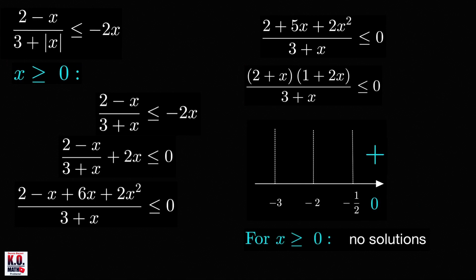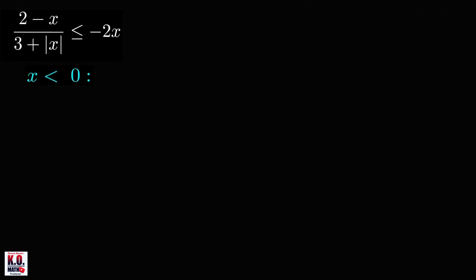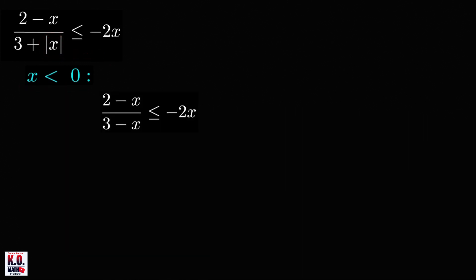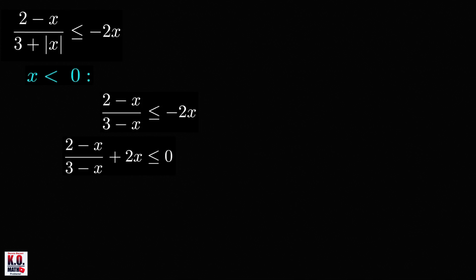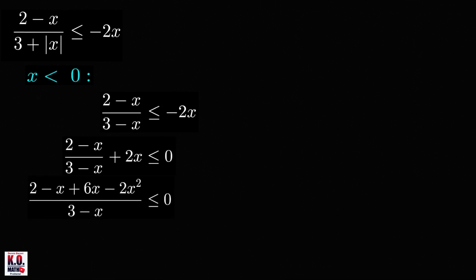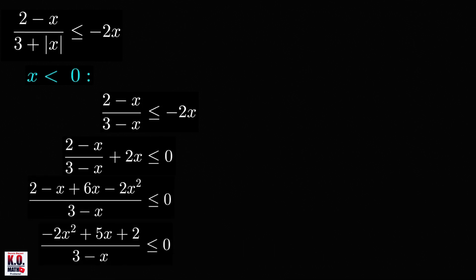Now let's look at the other case, x less than 0. If x is less than 0, then the absolute value of x is equal to negative x. Therefore, we can write the left-hand side of our inequality as 2 minus x all over 3 minus x. And again, moving the term on the right-hand side to the left-hand side, we'll get the following inequality. Combining these two terms into a single fraction and simplifying the numerator, we'll get negative 2x squared plus 5x plus 2.